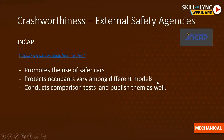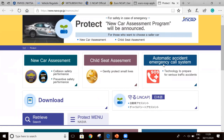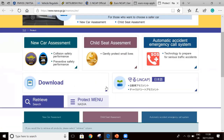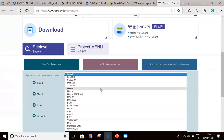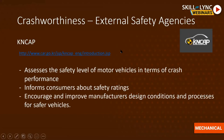Next is J-NCAP — the Japanese New Car Assessment Program — similar to previous external safety agencies, it conducts comparison tests and publishes them. It includes new car assessment, child seat assessment, and an automatic accident emergency call system. You can download protocols and see assessment results for your vehicle from their website.